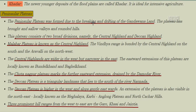The Peninsular Plateau was formed due to the breaking and drifting of Gondwana land. The plateau has broad and shallow valleys and rounded hills. It consists of two broad divisions: the Central Highlands and the Deccan Plateau. The Malwa Plateau is known as the Central Highland, bounded by the Vindhya Range in the south and the Aravalli in the north-west. The Central Highlands are wider in the west but narrower in the east, with eastward extensions locally known as Bundelkhand and Baghelkhand.